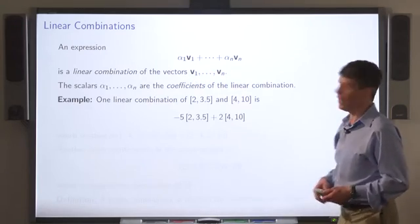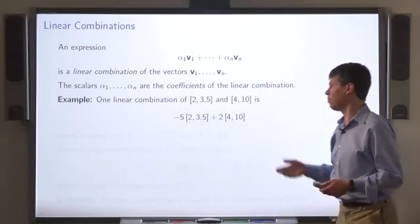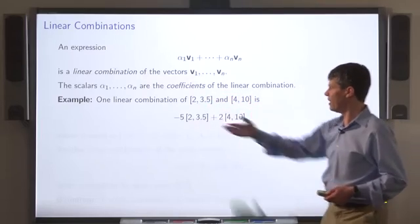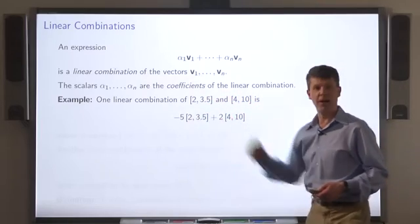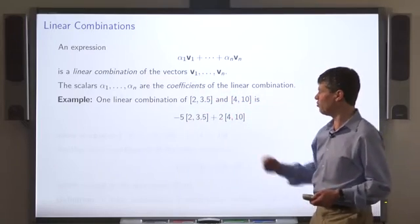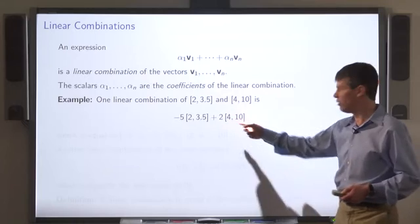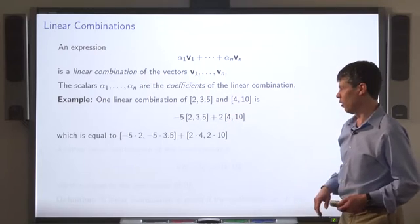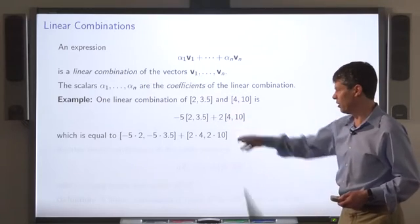Here's a simple example. One linear combination of these two vectors is: multiply the first one by minus 5, the second one by 2, and add the result. So it's equal to this.